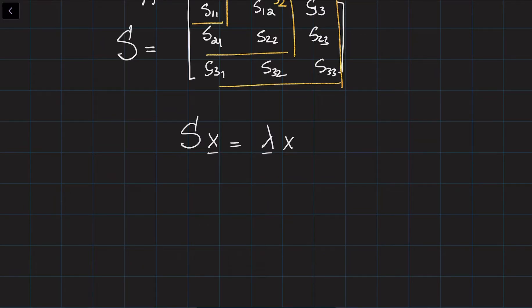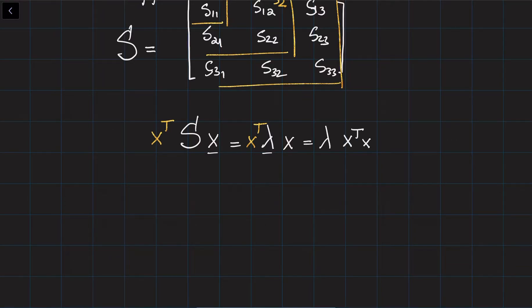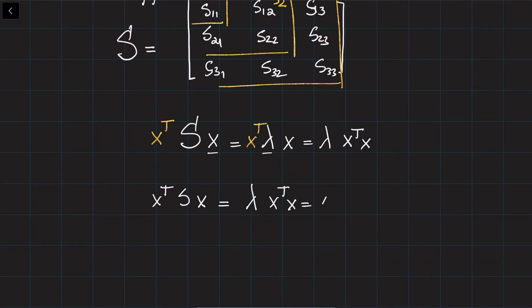I would like to multiply X-transpose from both sides. Multiplying both sides by X-transpose, and since lambda is a constant, I can take it out. The equation becomes: X-transpose S X equals lambda times X-transpose X, which equals lambda times the norm of X squared.